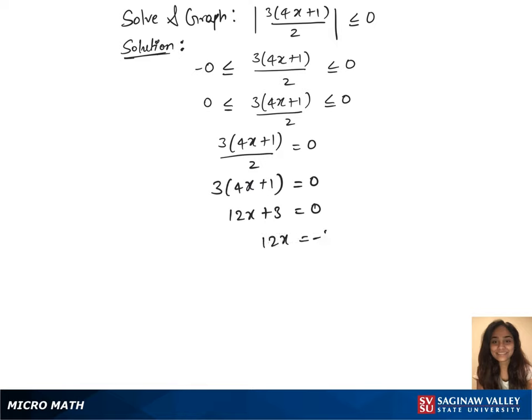Subtract 3 on both sides, it gives us 12x equals minus 3. Divide 12 on both sides, which gives us x equals minus 1 over 4.